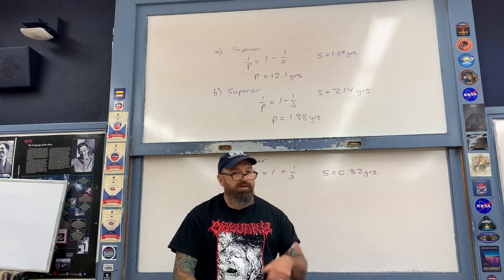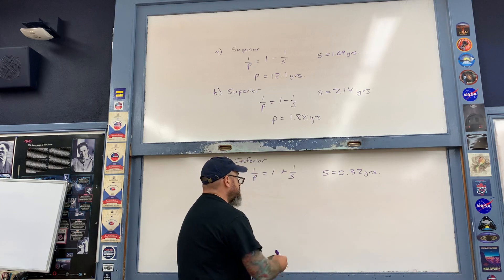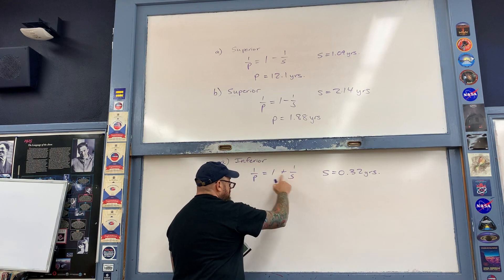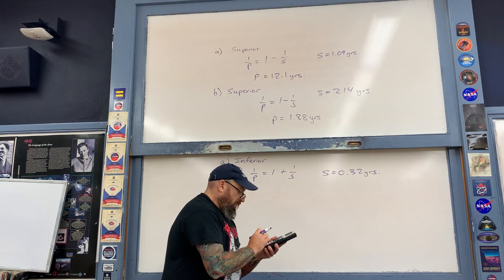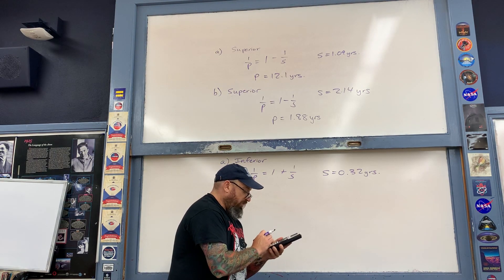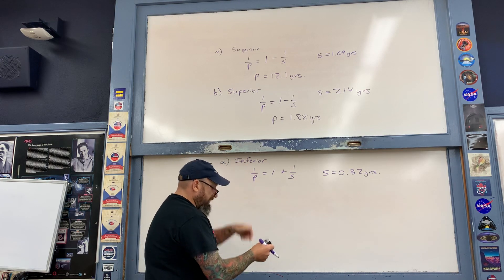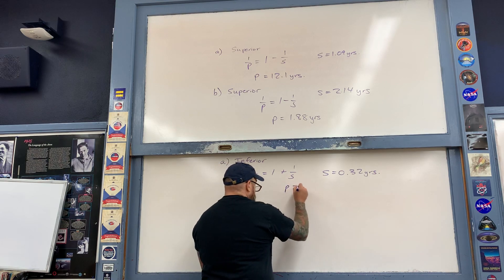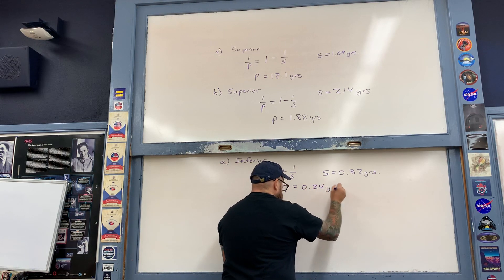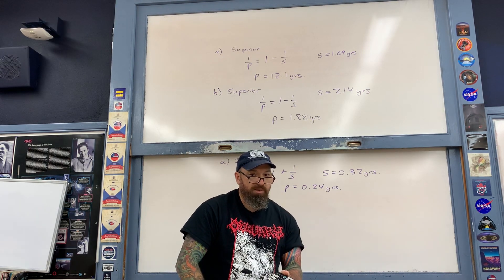In part A, the synodic period of Mercury is 0.32 years — this is the time between one inferior conjunction and the next. We take 0.32, plug it into the formula: 1 plus 1 divided by 0.32, then take the reciprocal at the end of the process to obtain P. P ends up being equal to about 0.24 years — that's Mercury's orbital period, how long it takes Mercury to orbit the Sun. As you can see, it's quite a short period of time.